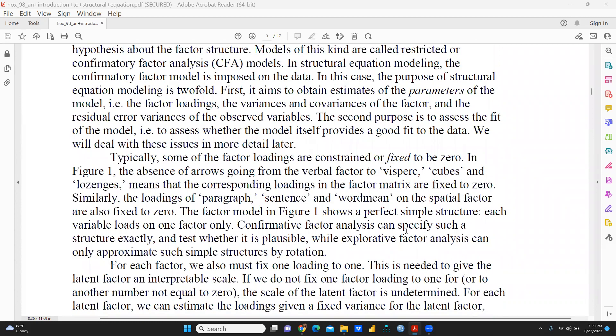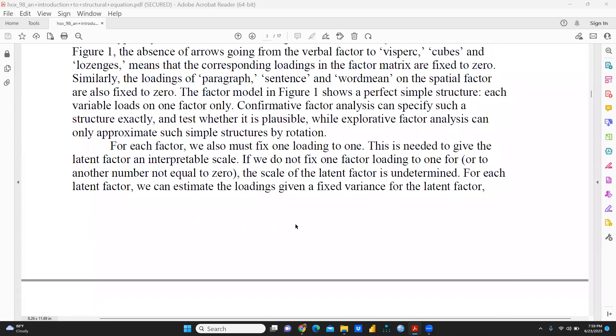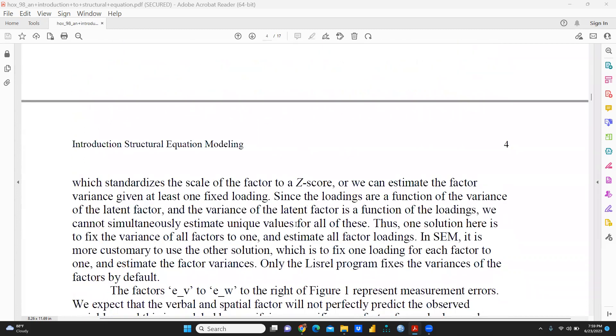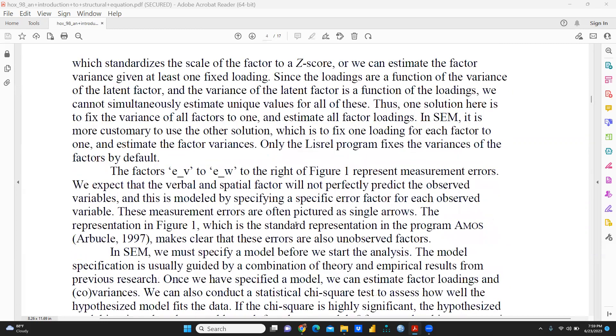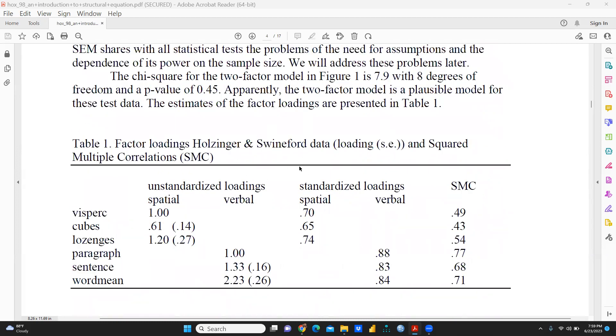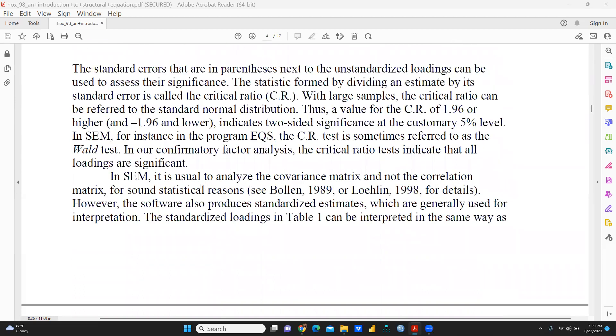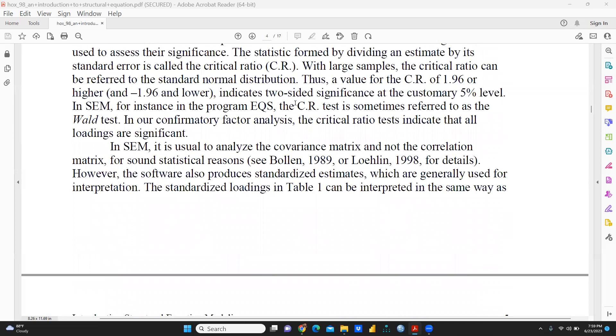So here we will go through model fit. After this model fit, you can see these factors—we also must fix one loading to one. Now Z to Z score also you can calculate, and you can see this kind of table: factor loadings and squared multiple correlation (SMC). Then we come to the standard errors and critical ratio. A CR of 1.96 or higher and minus 1.96 or lower indicates two-sided significance at the customary 5% level.